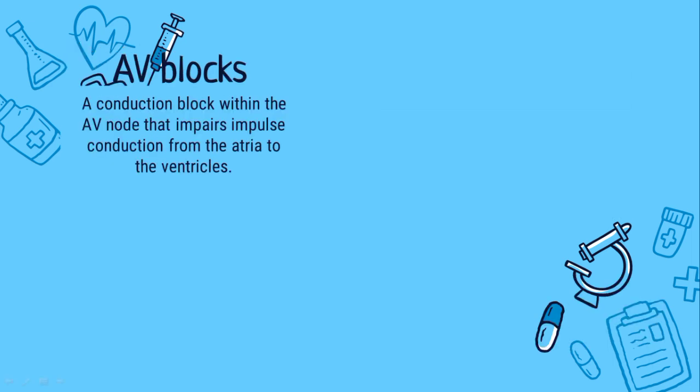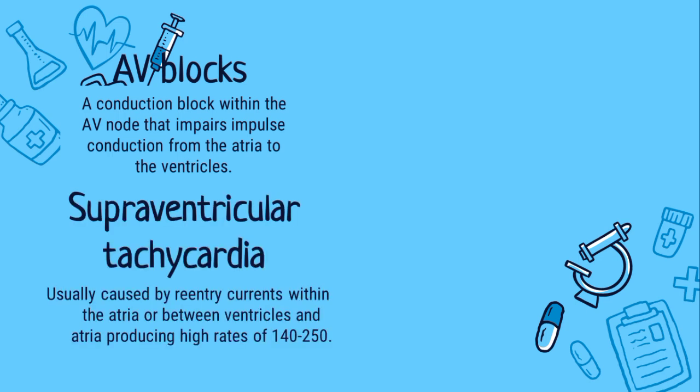Next is the AV blocks. It is a conduction block within the AV node that impairs impulse conduction from the atria to the ventricles. Next is the supraventricular tachycardia. It is usually caused by re-entry currents within the atria or between ventricles and atria, producing high heart rates of 140 to 250. It occurs when rapid electrical impulses are generated outside the SA node, causing a fast heart rate. This can occur in the heart muscle of the atria or within the AV node. The rapid impulses may occur periodically or be sustained for long periods of time, causing damage to the heart.